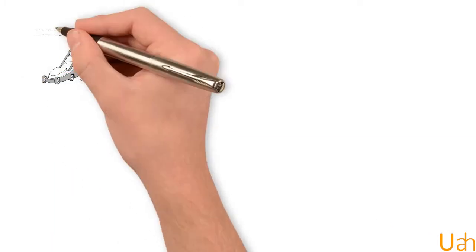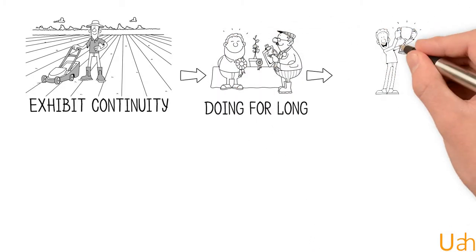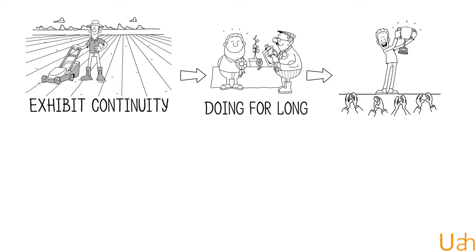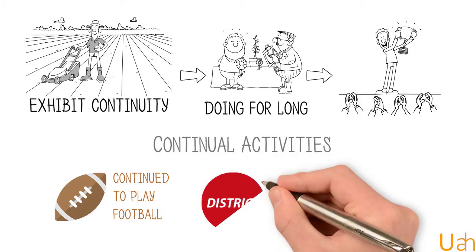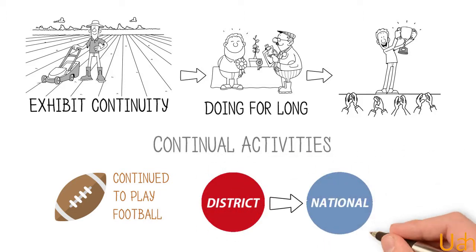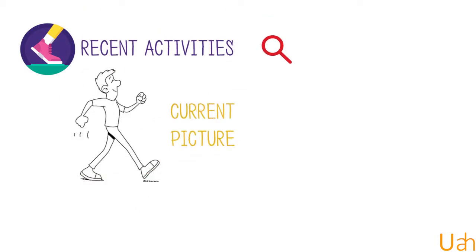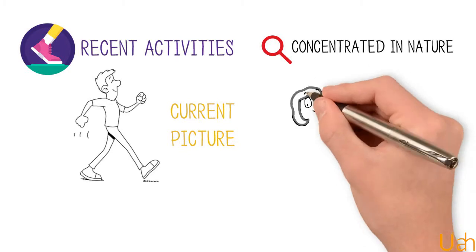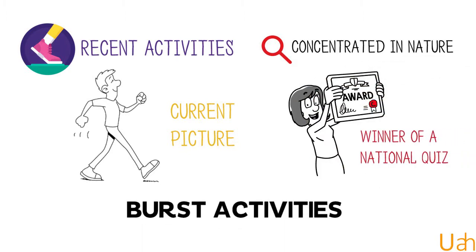Older activities exhibit continuity by focusing upon things that you have been doing for long and usually have an upwards trajectory. They are called continual activities — like you have continued to play football but have moved from district level to nationals over the last three years. More recent activities give a current picture of your personality and tend to be more concentrated in nature, like winner of a national quiz. They are called burst activities.